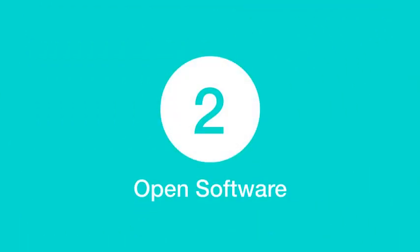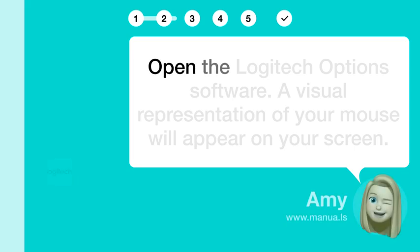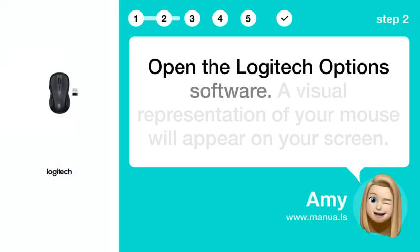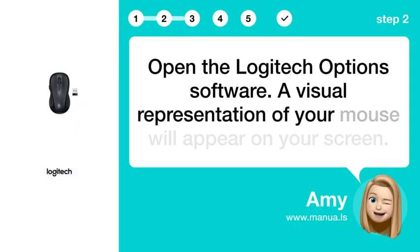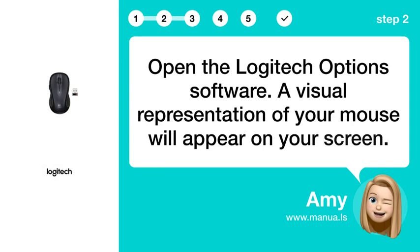Step 2: Open software. Open the Logitech Options software. A visual representation of your mouse will appear on your screen.